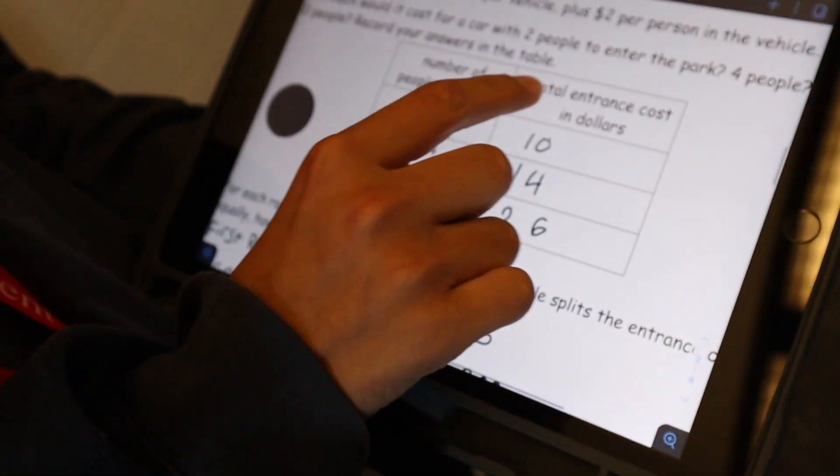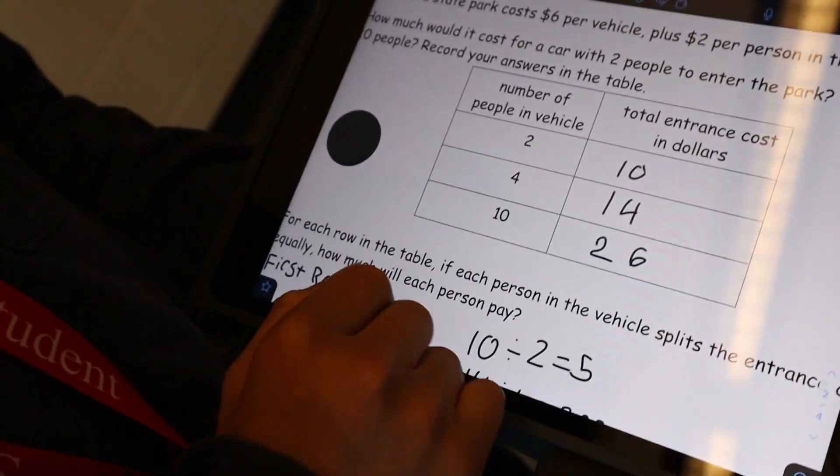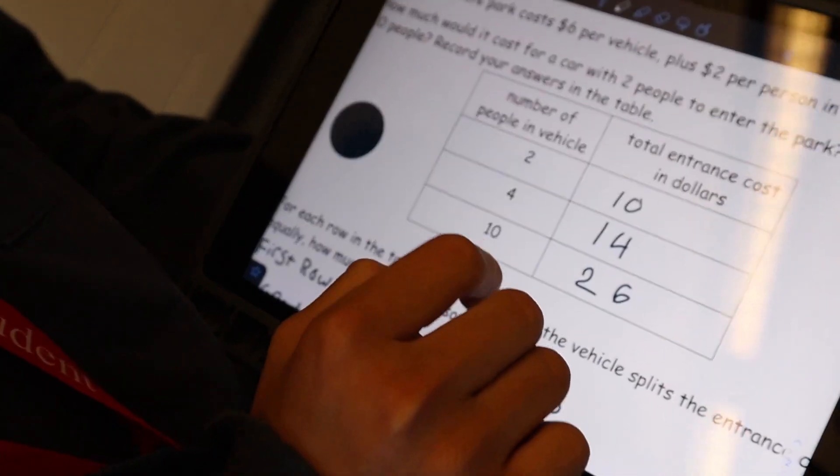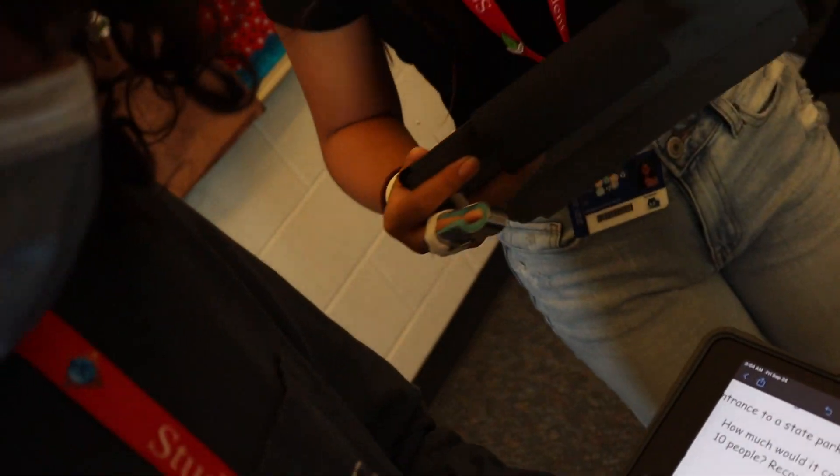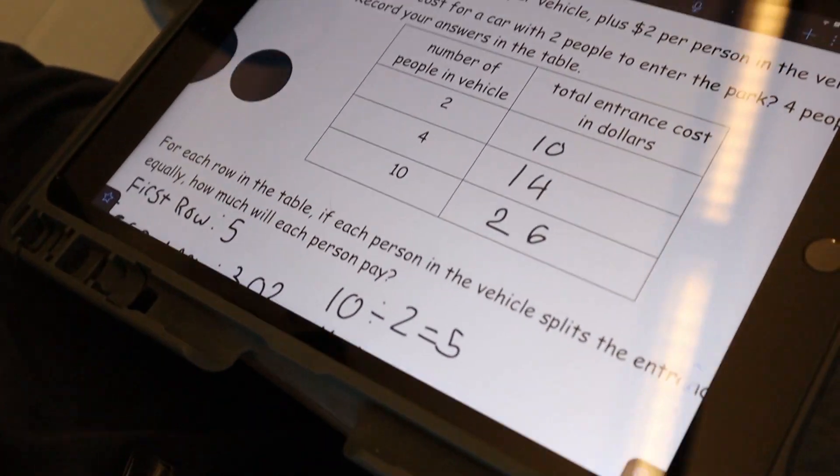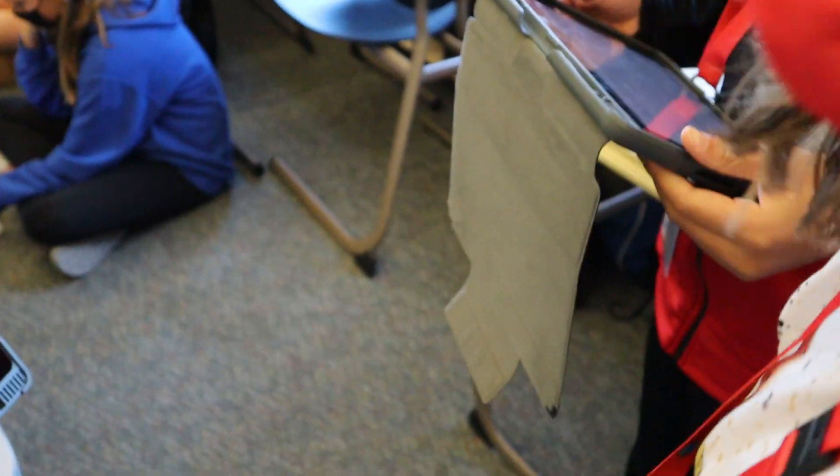So $2 per person in the vehicle, so 10 times 2 is 20, plus the entrance fee is $6, so I got $26. Can I record just $2? Sure, yeah.